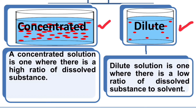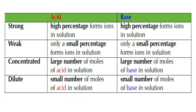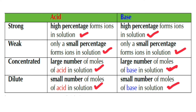An acid is strong if there is a high percentage of ions — H⁺ — formed in solution, and a base is strong if there is a high percentage of OH⁻ ions. A weak acid or weak base only produces a small percentage of ions in solution. Concentrated means a large number of molecules of acid or base in solution, while dilute means a small number of molecules. That covers strength, concentrated, and dilute.